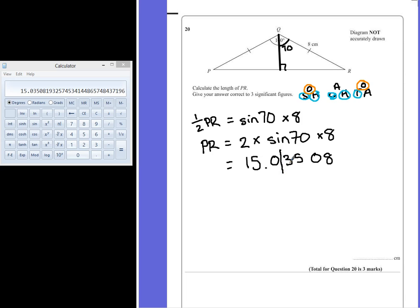Do I have to round this up, or does it stay the same? The number after the line is smaller than 5, so it stays the same. So the length of PR would be 15.0 centimeters.